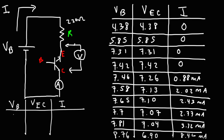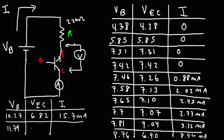Using seven AA batteries, VB was measured to be 10.27 volts, VEC was 6.82, and the current was 15.7 milliamps. Using eight AA batteries, VB was 11.79 volts, VEC went up slightly to 6.84, and the current increased to 22.5 milliamps.